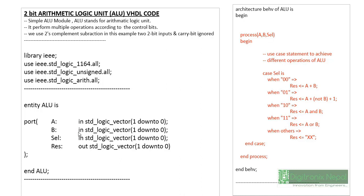In the architecture behavioral section, a process is started with a sensitivity list of all inputs: A, B, and `scl`. In combination logic circuits, the sensitivity list must include all inputs; in sequential circuits, we also include the clock. Inside the process, we use a `case` statement on `scl`. When `scl` is `00`, it performs A plus B and passes the result to `res`; when `scl` is `01`, it performs A minus B.